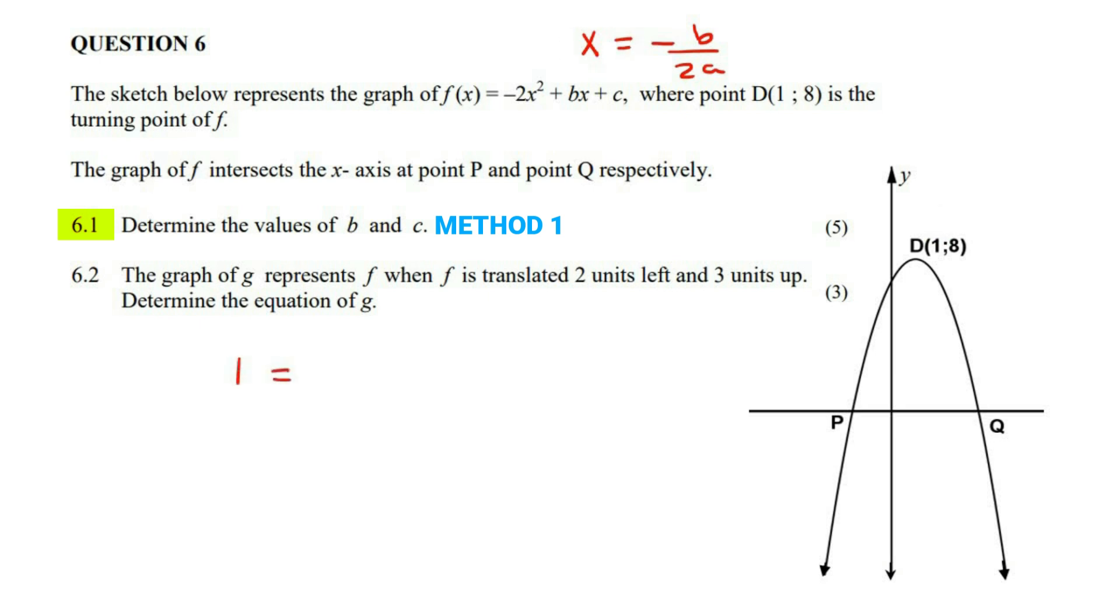So we could say one is equal to minus b, which we don't know, over 2a. Now a is negative two.